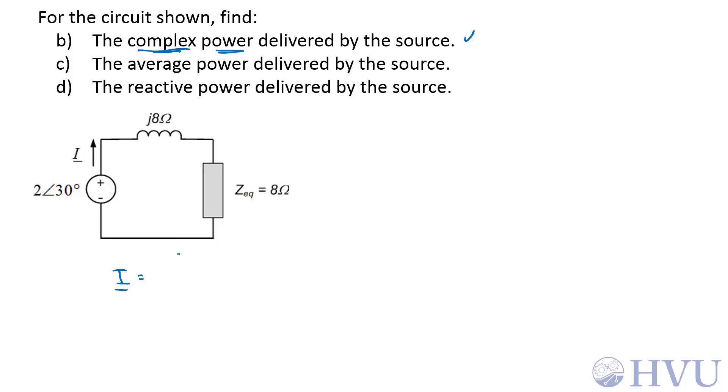is the source voltage, 2 at an angle of 30 degrees, over this equivalent impedance of these two. Those are in series, so it's going to be the sum of the individual impedances. So it's 8 plus J8 ohms.